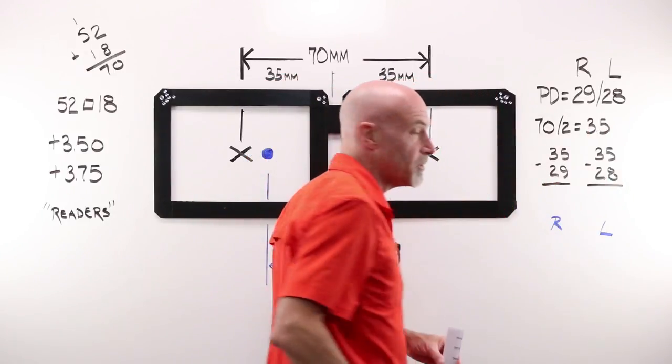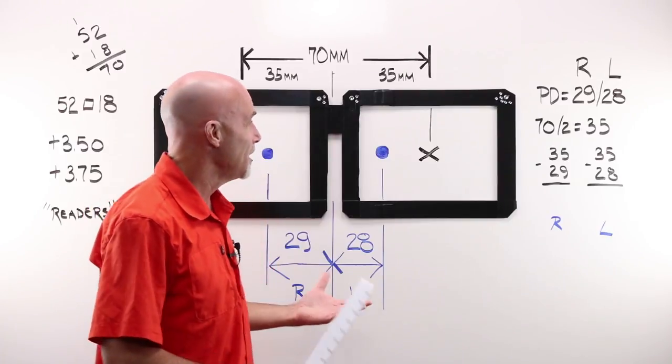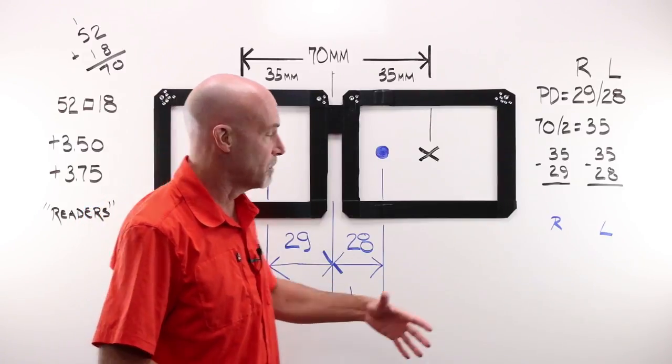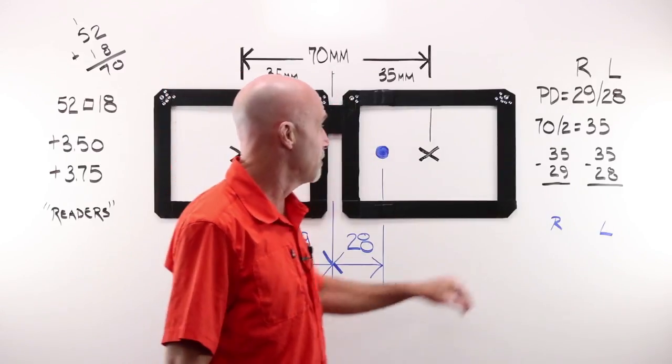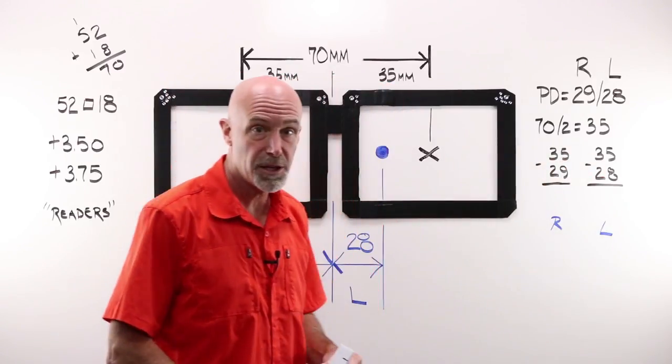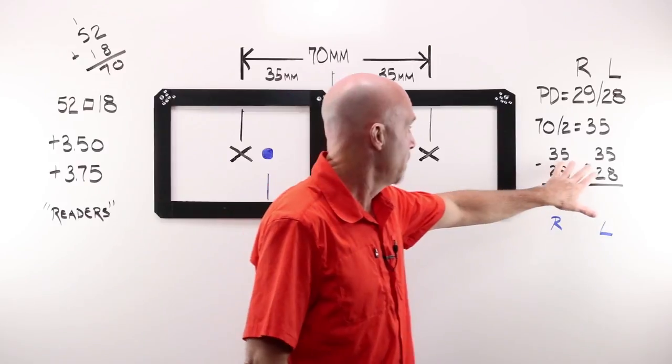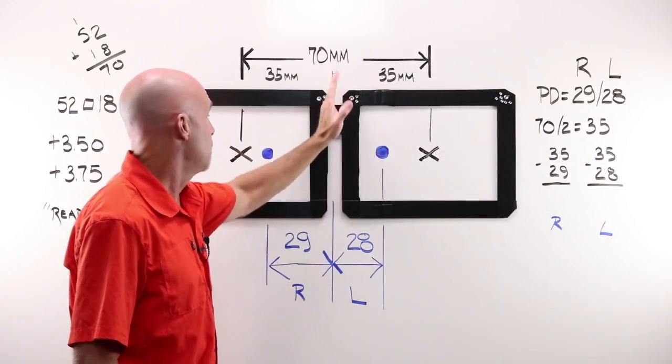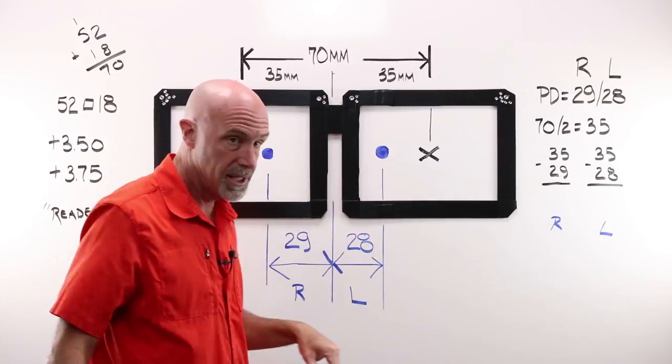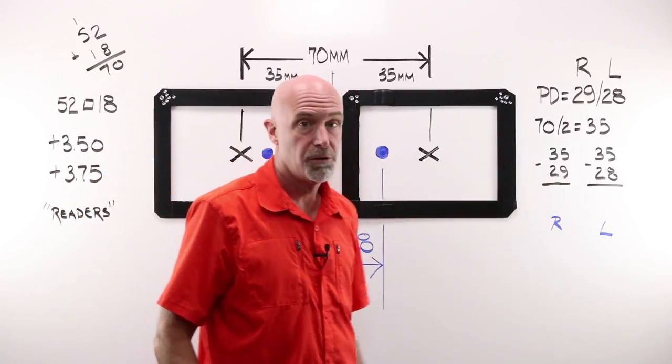So if I have two numbers for my PD, I need two numbers to work with with my frame. So I take my 70 millimeters and I divide it in half, and I get 35. That's where that number comes from. Where does 35 come from? Splitting my frame, A and DBL, or my distance between centers, in half. 35, 35.